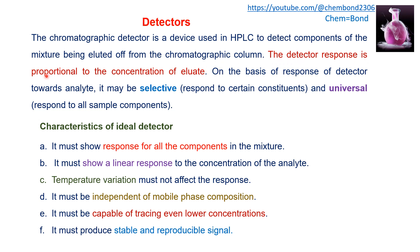The detector response is proportional to the concentration of the analyte. The analyte coming out from the column will show a response in the detector, and it will determine which element is present or how much of the element is present. On the basis of the detector response toward the analyte, it can be selective — responding to certain components — or universal, responding to all components.